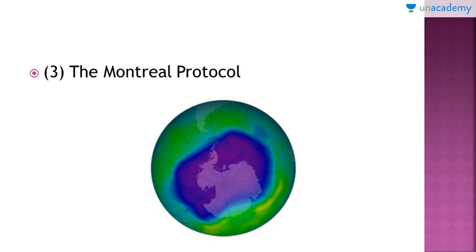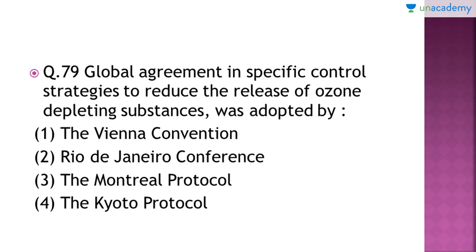The Montreal Protocol was actually an international treaty between more than 20 countries including India, in which it was decided which substances are to be banned or reduced to protect the ozone layer. You can see here the blue portion which is usually called the ozone hole.